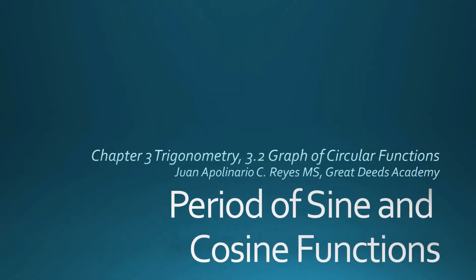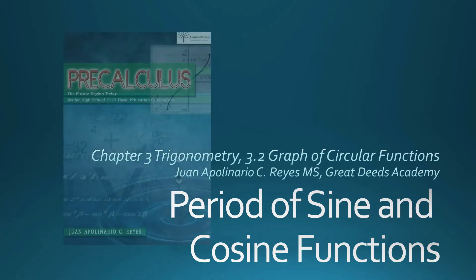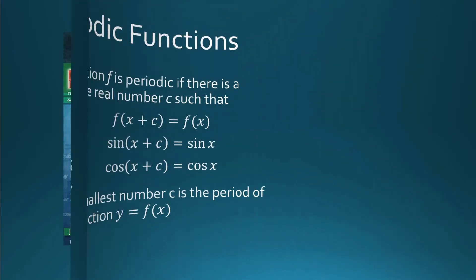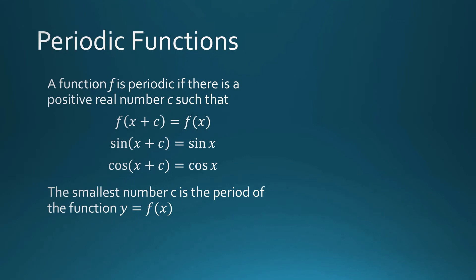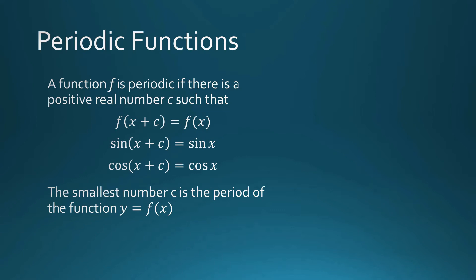We are still in the period of sine and cosine functions. What are periodic functions? A function f is periodic if there is a positive real number c such that f(x + c) is equal to f(x). For our circular functions, sine(x + c) = sine(x) and cosine(x + c) = cosine(x). The smallest such number c is the period of the function y = f(x).